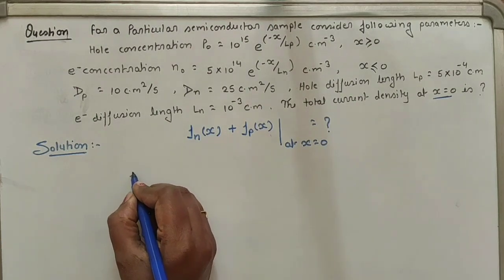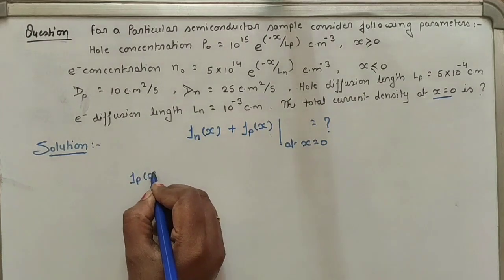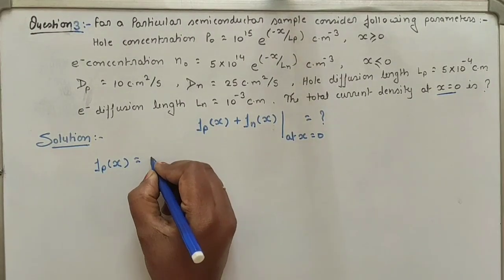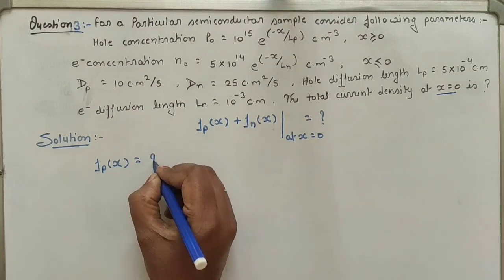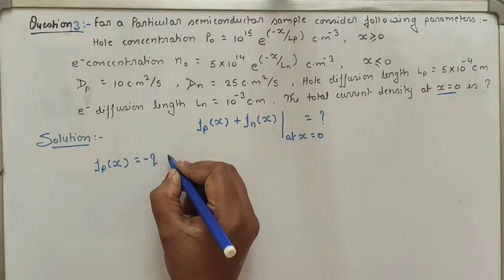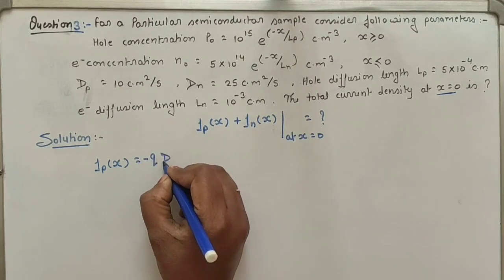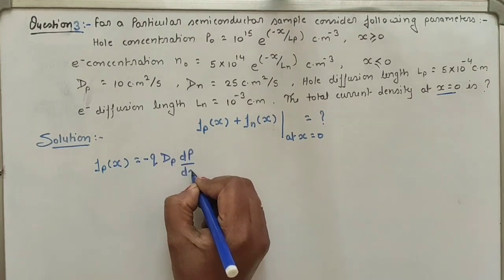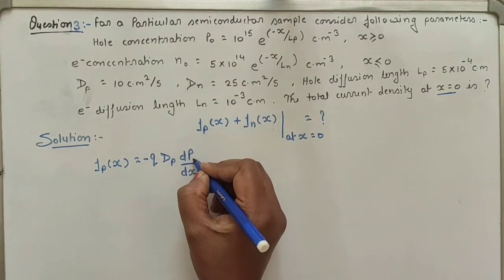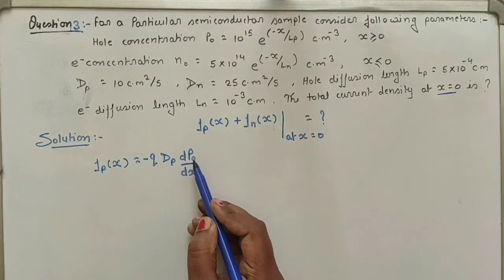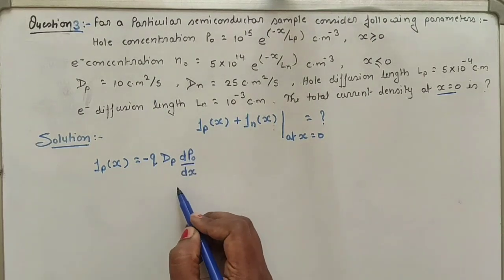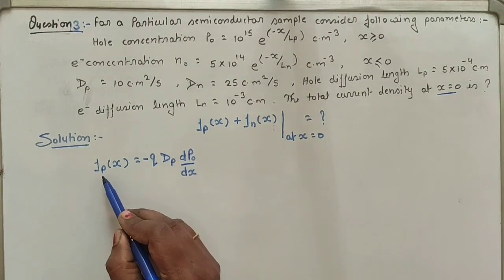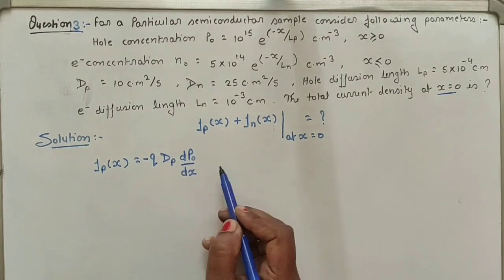First, let us find JP of x. The formula for hole diffusion current density is: JP(x) = minus q DP times dp₀/dx. This is the hole diffusion current density formula.